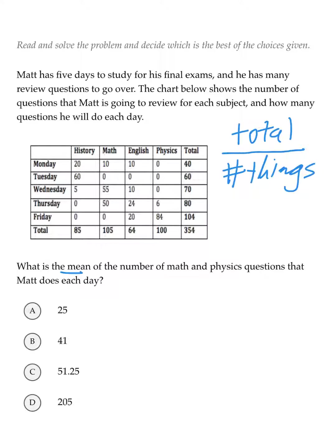So for this problem, we want to find the mean number of math and physics questions that Matt does each day. We just happen to have a chart here that gives us the number of questions that Matt is going to do each day. Let's take the numbers from this chart for math and physics to find our average.